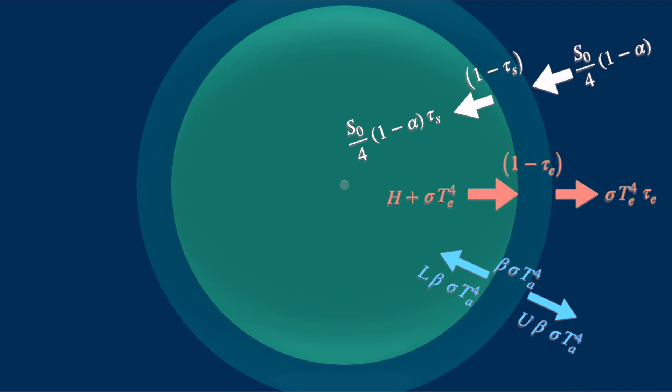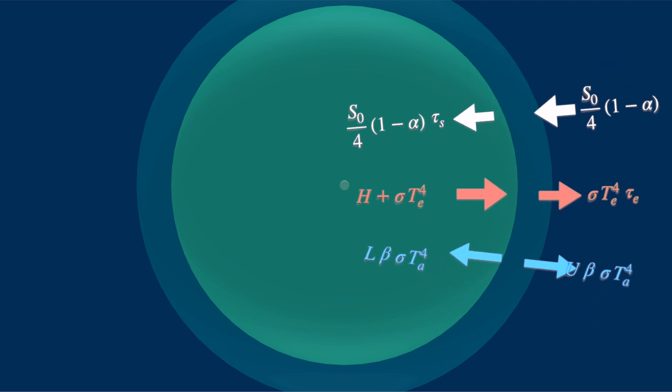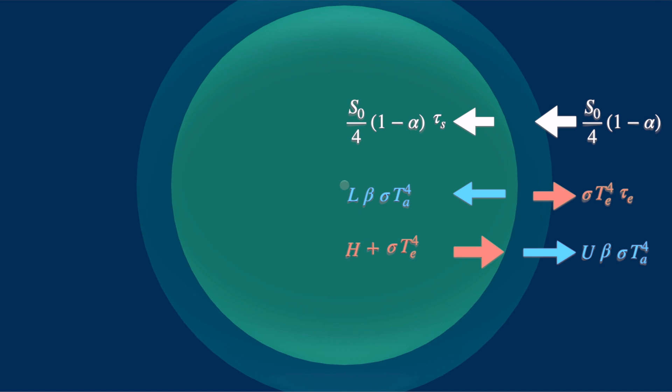We now focus on the exchanges that the atmosphere makes with the space and the Earth. So let's straighten things. At equilibrium, the sum of the outflows to space must equal the inflows from space. And similarly, the sum of the outflows to the Earth will equal the inflows from the Earth.